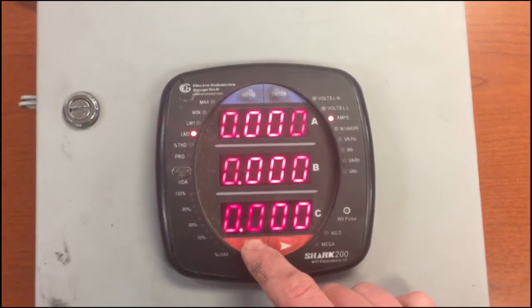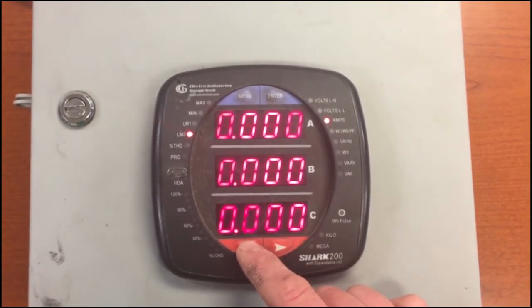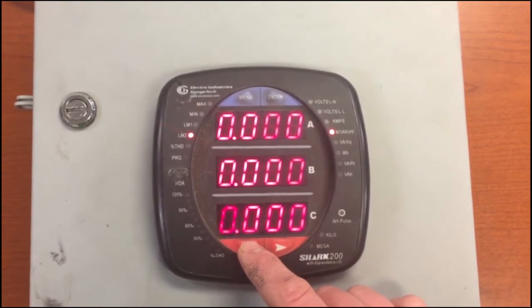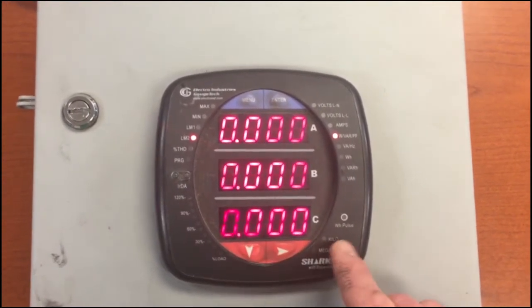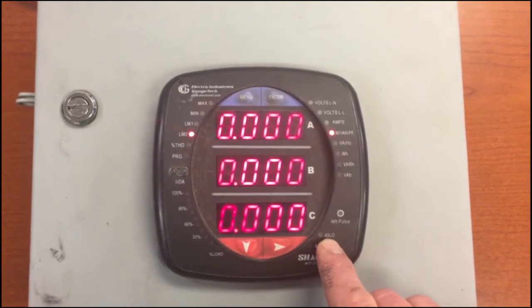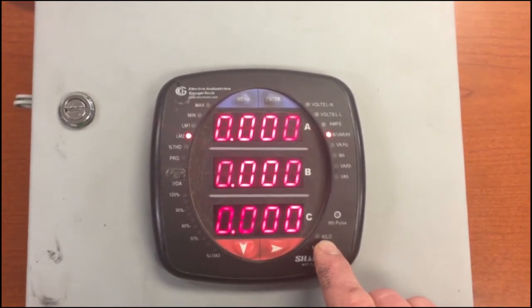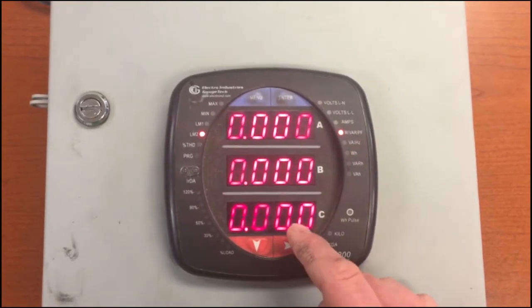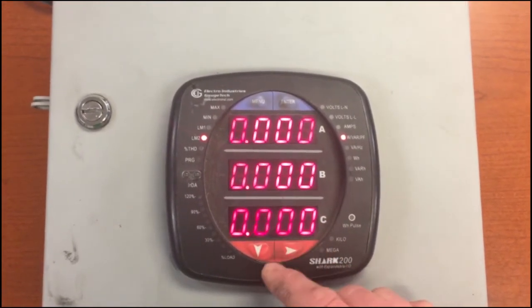Going down again you'd have your different amps for each phase and then here you would have your watts. Typically this would be lit up to indicate kilowatts. Then on your B line you'd have your vars and on your C line you'd have your power factor.